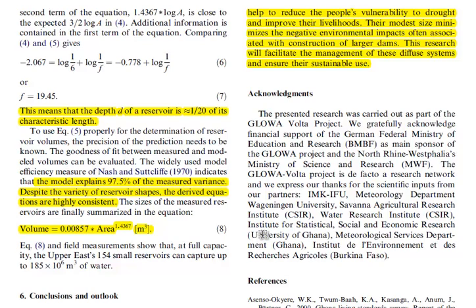Looking at it this way, you can characterize a typical reservoir as having a length about 20 times its depth — confirming these are relatively shallow reservoirs. Crucially, this simple equation explains 97.5% of the measured variance in volume. So if you can measure the surface area via remote sensing, you can also make a very accurate estimate of the actual volume stored in these reservoirs.